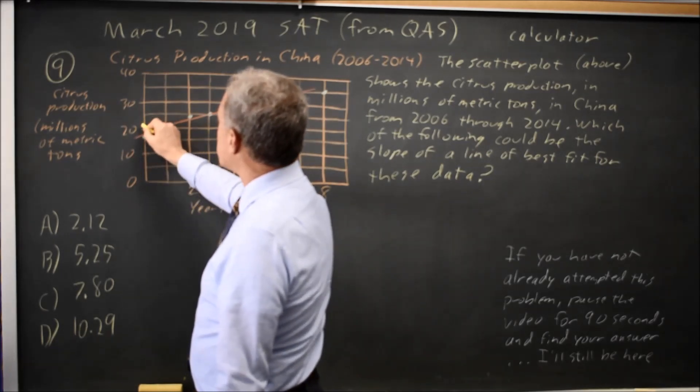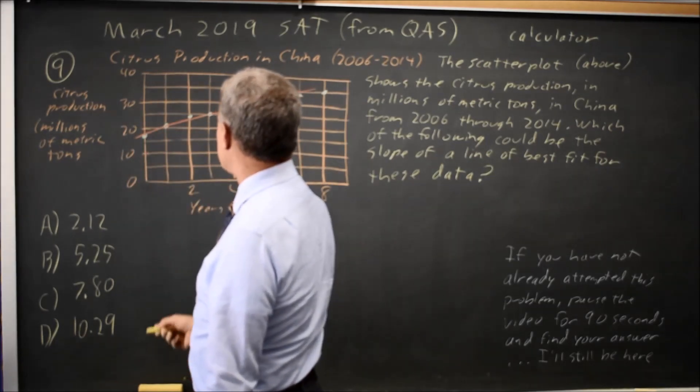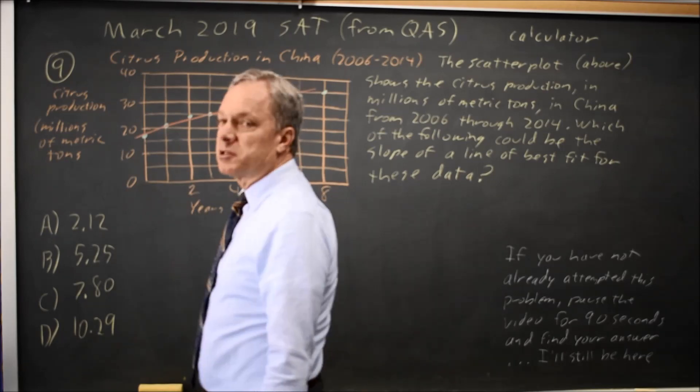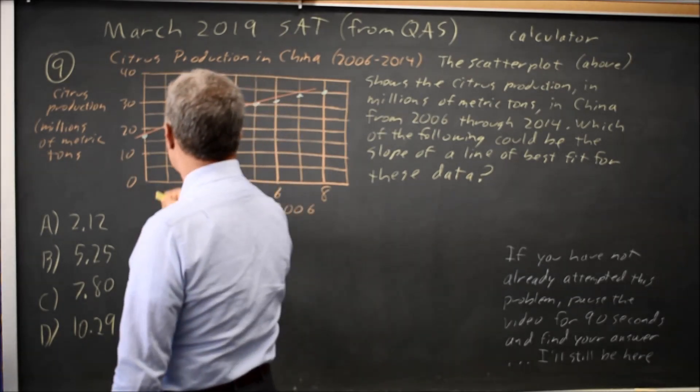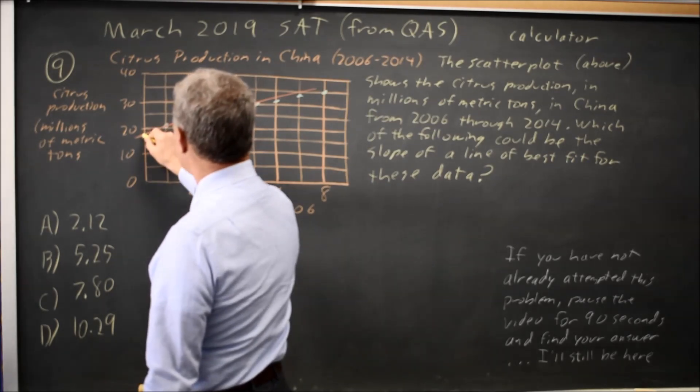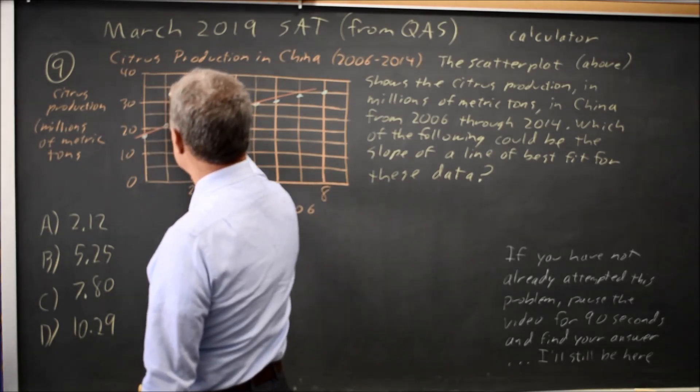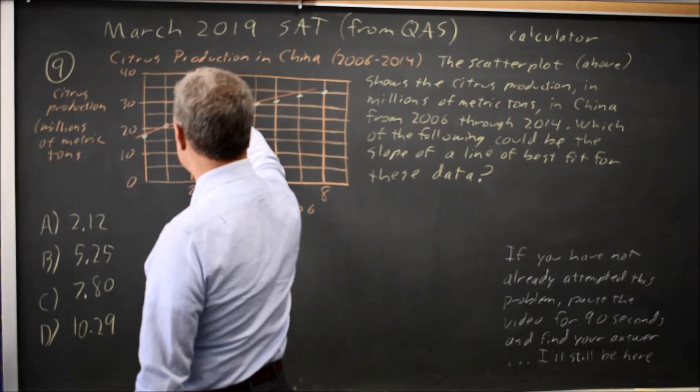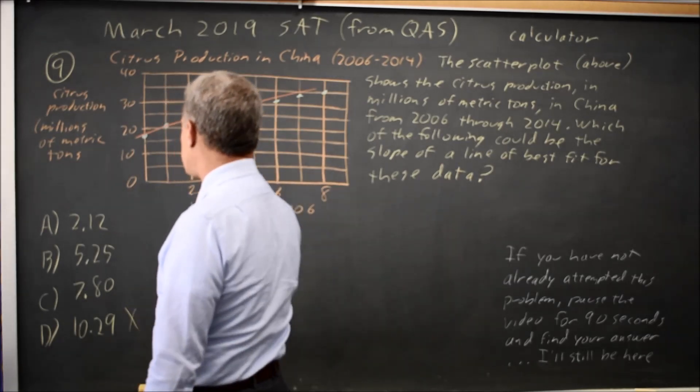Here, each vertical square is 5 millions of tons, and each horizontal square is 1 year. So those are different scales. If my slope were 10, then I would go up from 18 to 28 to 38 over 2 years, and that is very clearly not the slope.